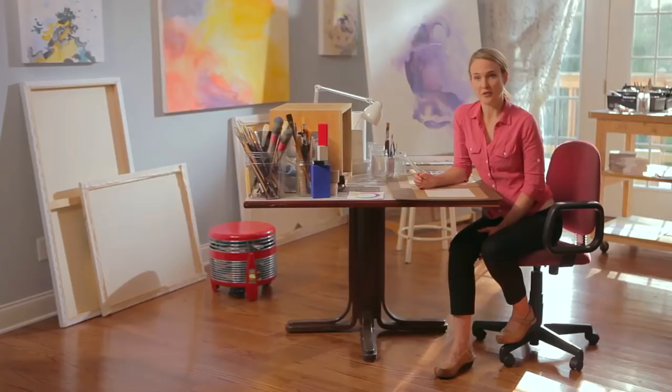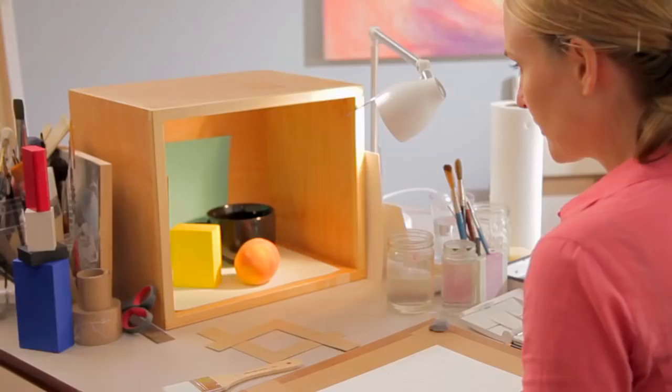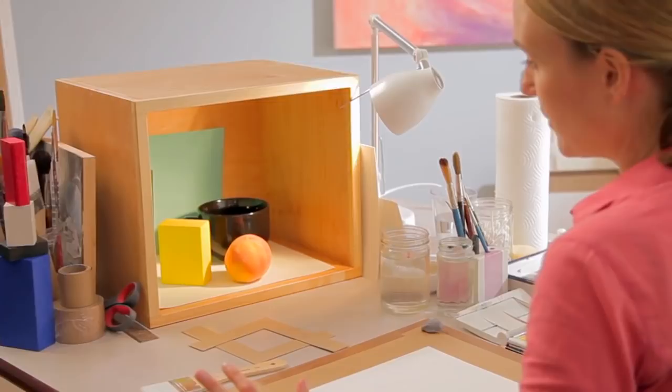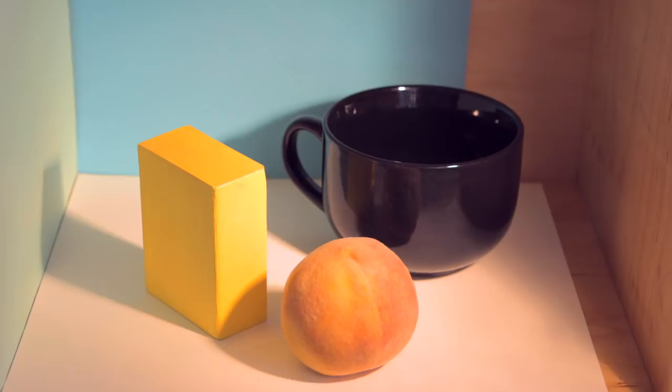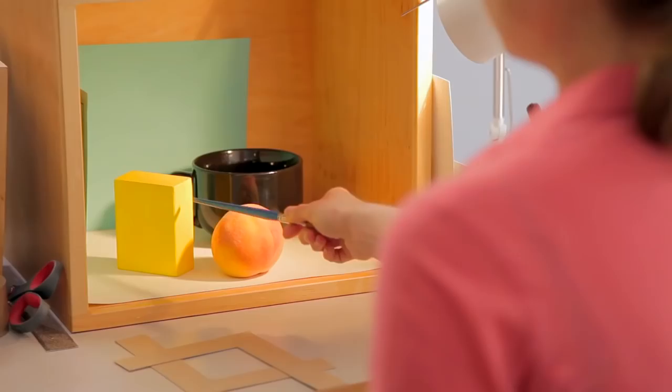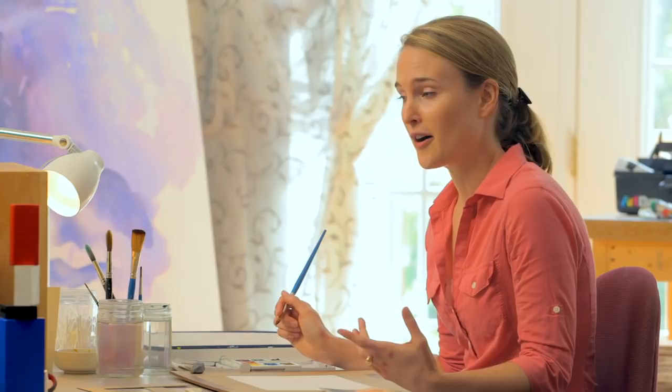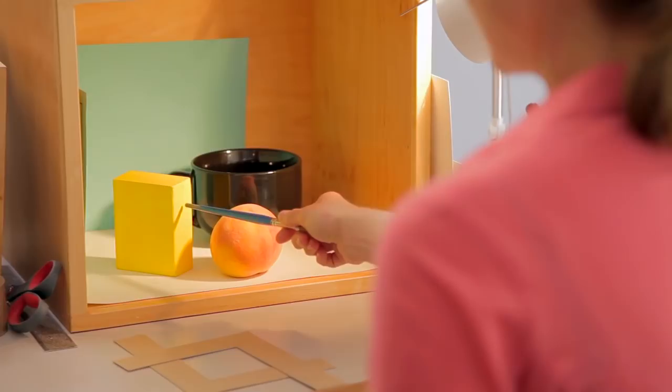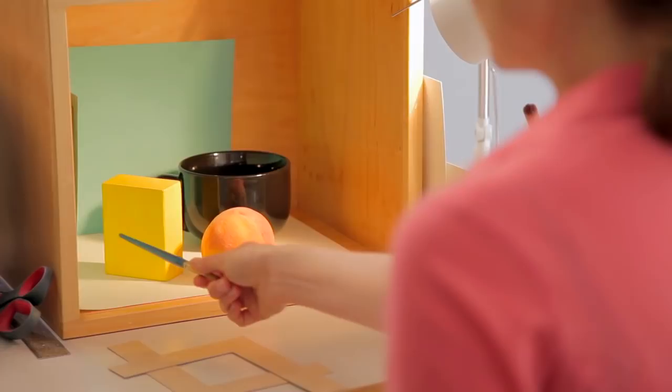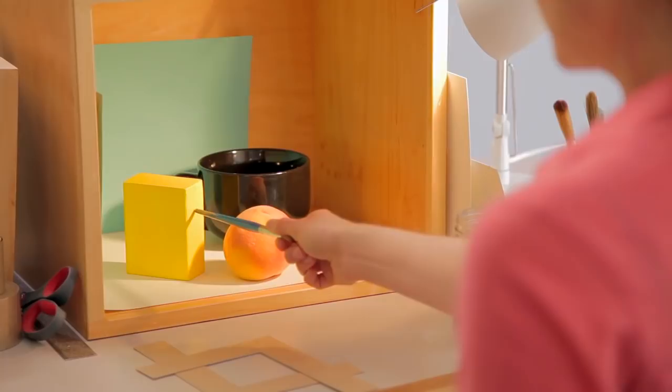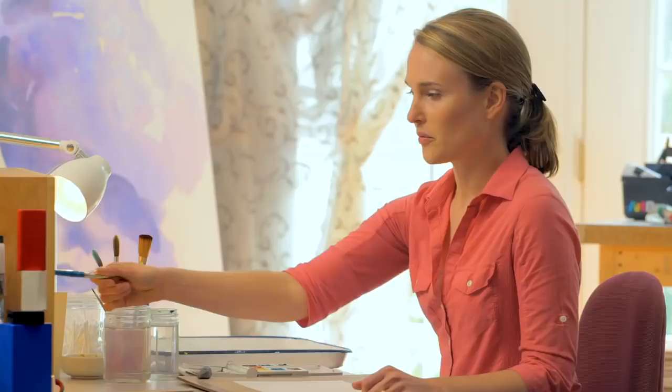Now one thing that we want to keep in mind while we are painting the yellow block is that even though our brain knows that it's a yellow block, the different sides of the block are different colors. So this side is more yellow than this side here, which is almost a bluish green in relationship to this side here. So we want to keep in mind that even though the block is yellow, our brain knows that the block is yellow, but we are painting an experience of light.